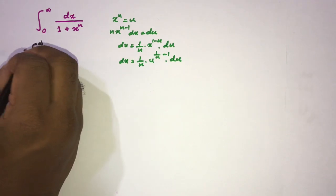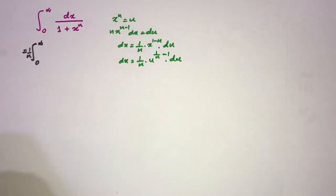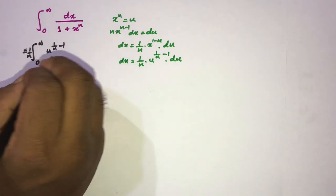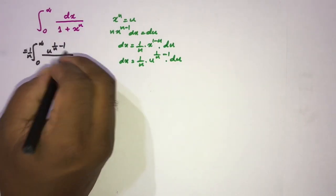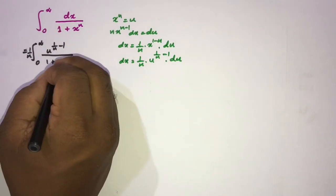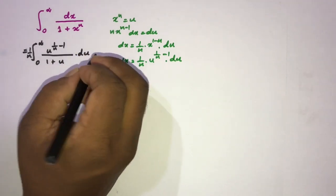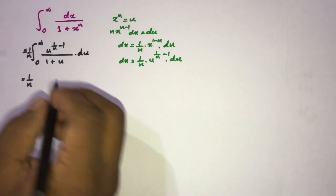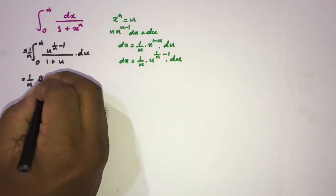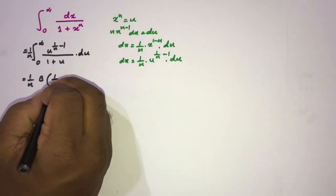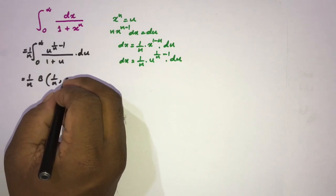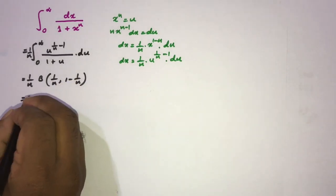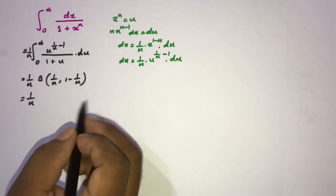Substituting into the integral, we can factor out 1/n to write (1/n) times the integral of u^(1/n - 1) over (1 + u) du. This is a standard beta function form, so we recognize this equals (1/n) times the beta function B(1/n, 1 - 1/n).